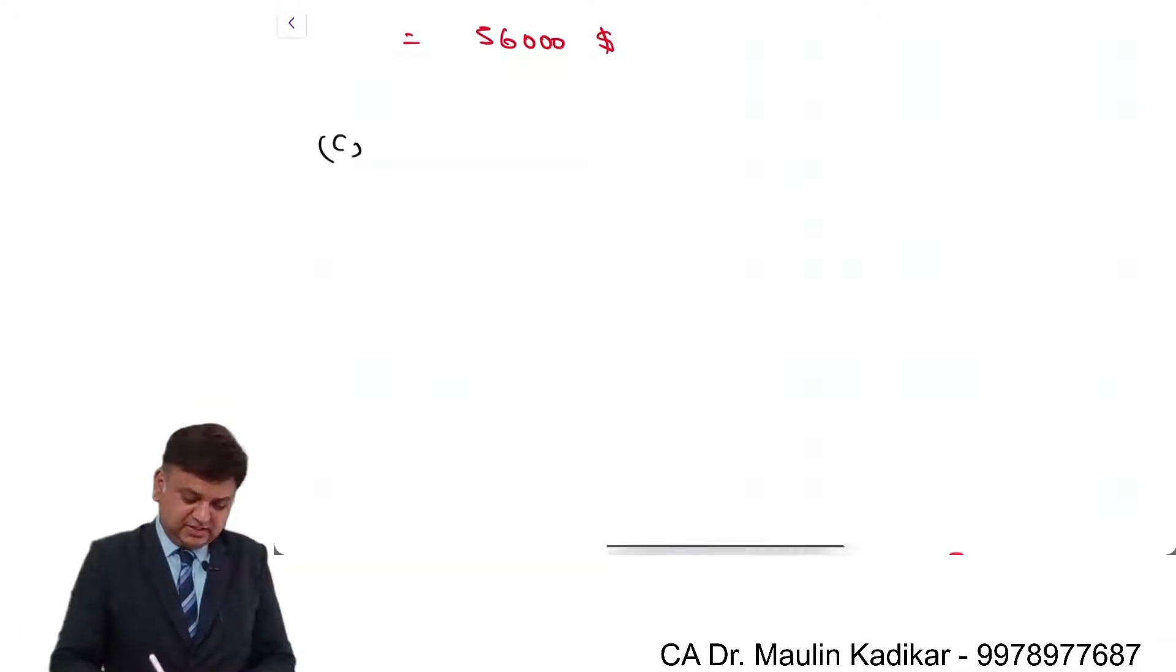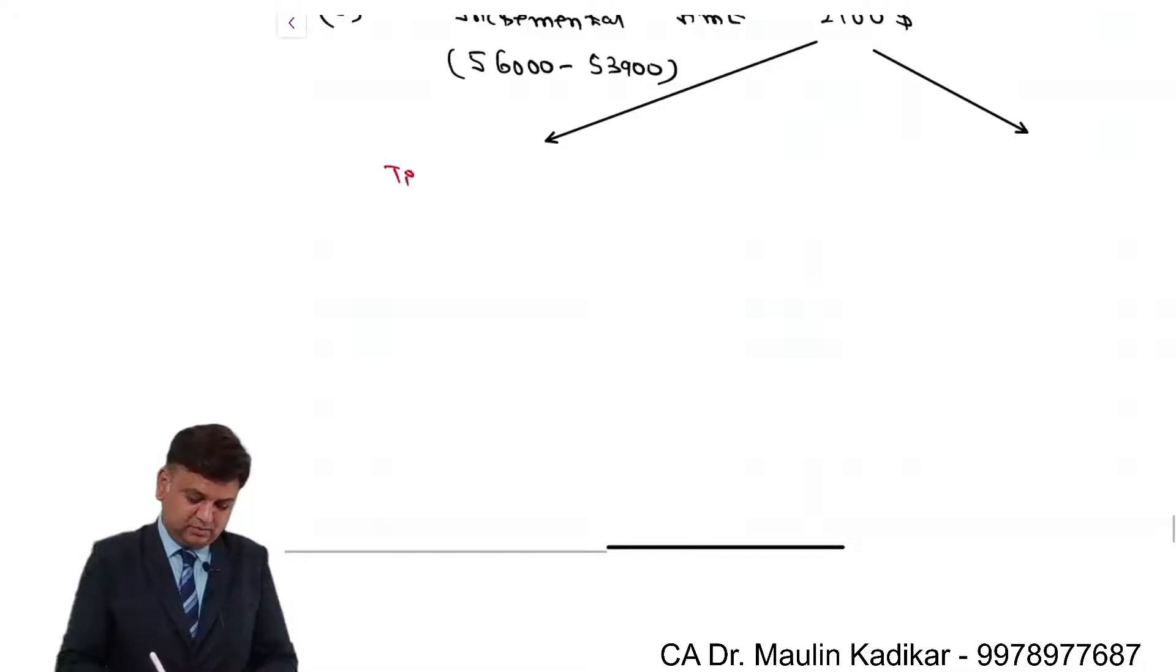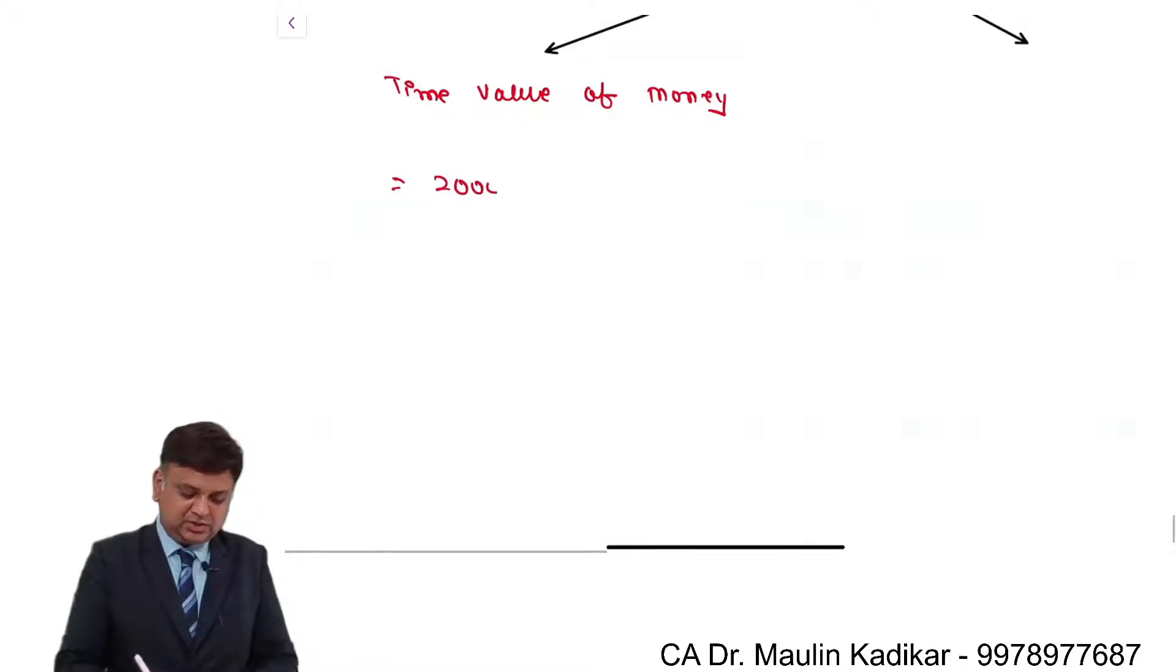For C question, we understand that it is the incremental amount: 56,000 minus 53,900, that comes to 2100 dollar. This 2100 dollar would be divided into two parts. One is the time value of money component. In that, it is 2000 Dutchmark into 0.56 dollar per dutchmark. So it is 2120 dollar.